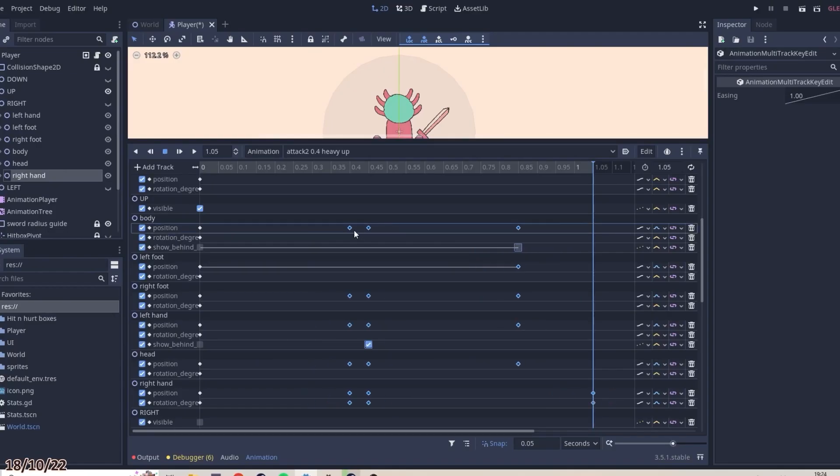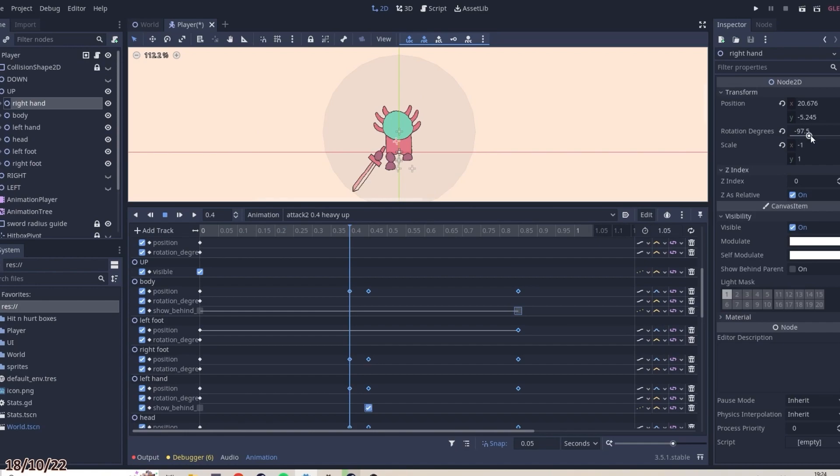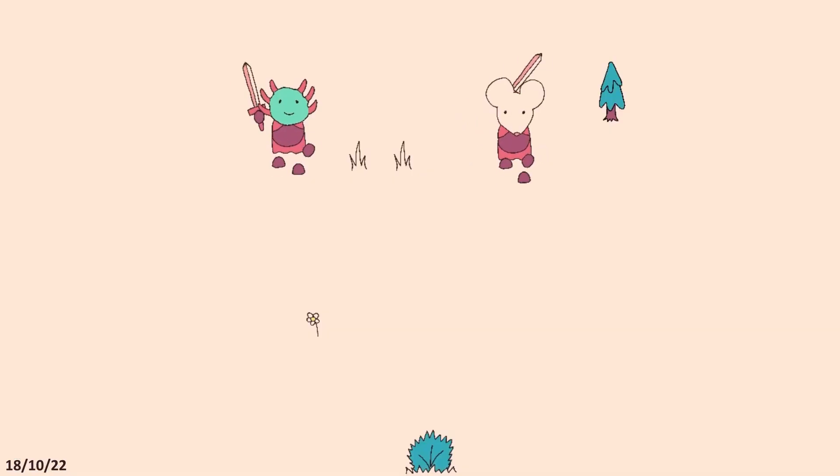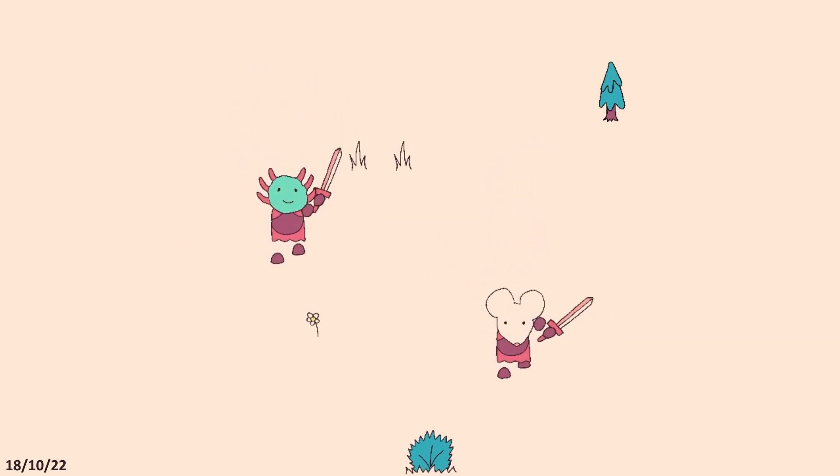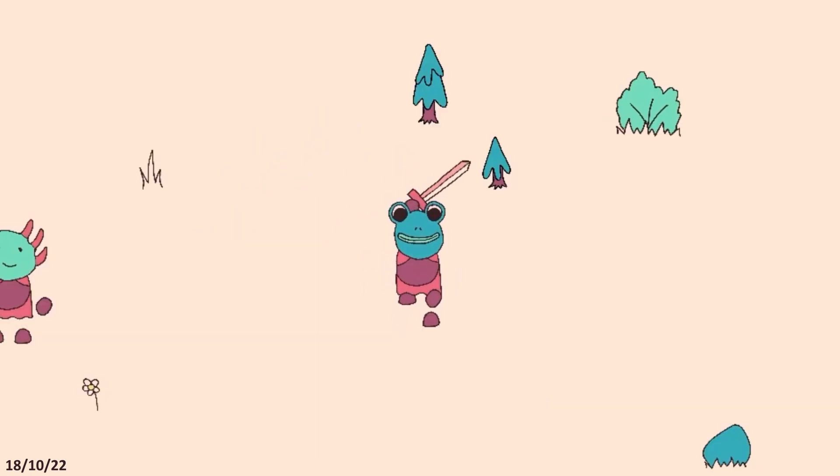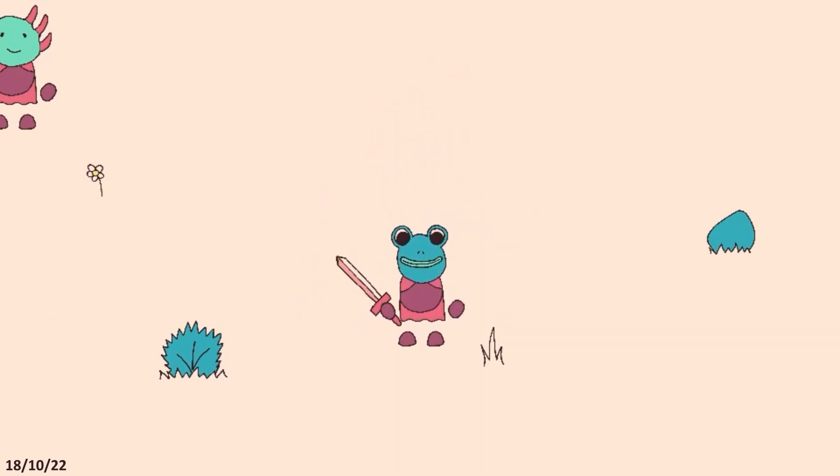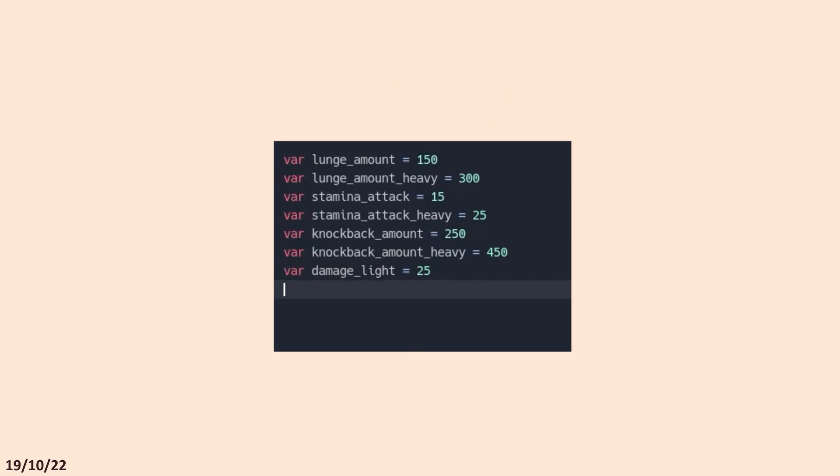Next up, I made heavy attack animations, which take a little longer to wind up, swing through a wider arc, and cause the player to lunge further. In game, if you hold the attack button for 0.2 seconds, you will perform a heavy attack. If you keep holding attack, you will hold your sword behind you until you let go, unless you press roll, which cancels the attack. Once you have performed a heavy attack, you can tap attack again at the end of a swing, to perform a combo heavy attack back in the other direction, just like with a light attack. I then did some tweaking to make heavy attacks use more stamina, knock your opponent back further, and deal more damage.